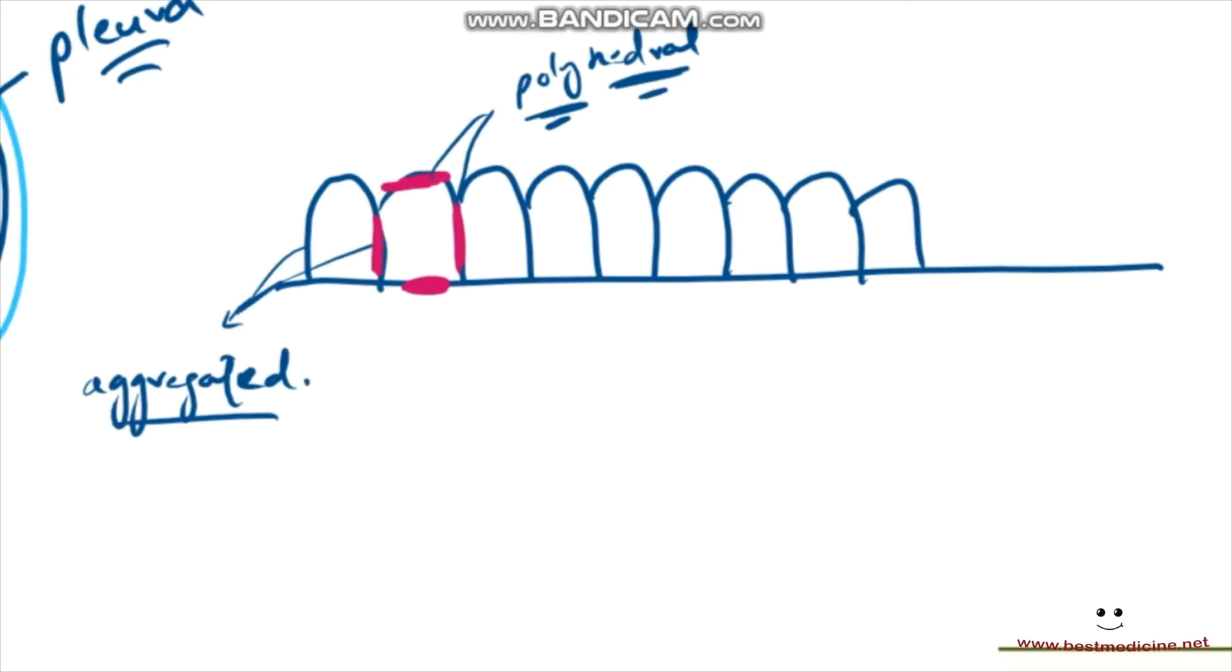These faces are actually given some names. The top face is called the apical face or apical domain. And the sides would obviously be lateral domains or lateral faces, and the bottom one is the basal domain or the basal face.